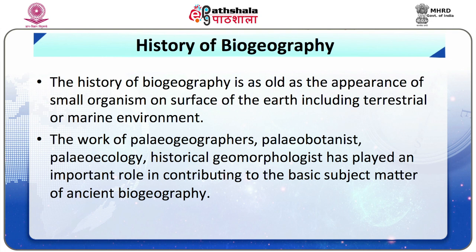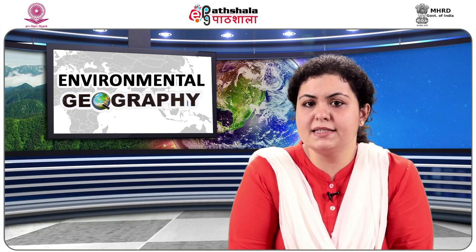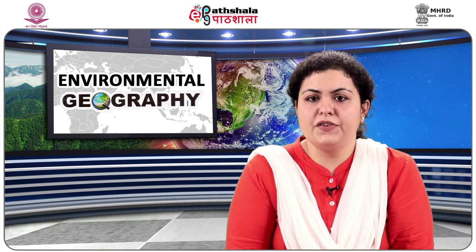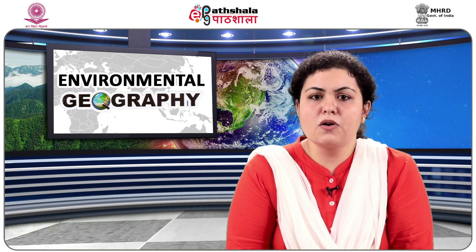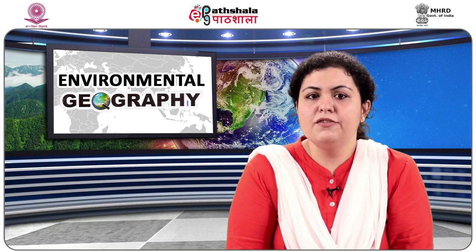The medieval period starts approximately from 4000 years before Christ to the workers of the 16th century. The 15th to 16th century was called the early modern era in the medieval history of biogeography, because in this period biogeography got its independent identity like that of chemistry, physics and geography. The period from the 17th century to the present date is called the modern age. The geographical voyages of discoveries in the 18th century paved the way for the rise of biogeography as a science in its own right. Biogeography started to receive much attention in the 19th century, when one of the first modern delimitations of biogeographic regions was created in 1858 by the English ornithologist Philip L. Slater, who based his division of the terrestrial world on the distribution of birds.